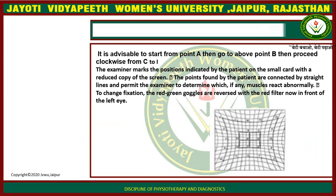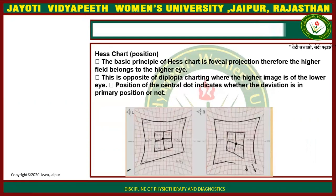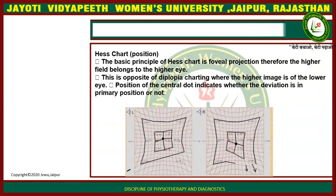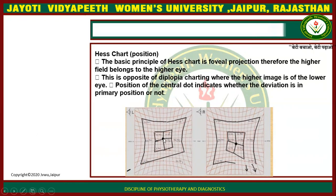The red-green goggles are then reversed, with the red filter now in front of the left eye. Regarding Hess chart position: based on the principle of foveal projection, the higher field belongs to the higher eye. This is opposite to the Diplopia chart, where the higher image belongs to the lower eye. The position of the central dots indicates whether the deviation is in primary position or not, and the Hess chart shows foveal projection in each eye.